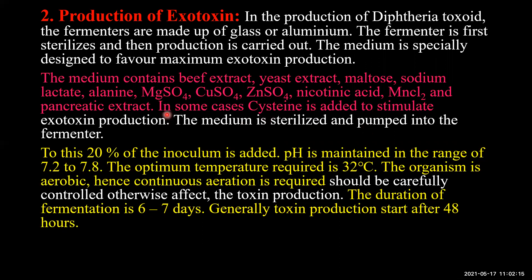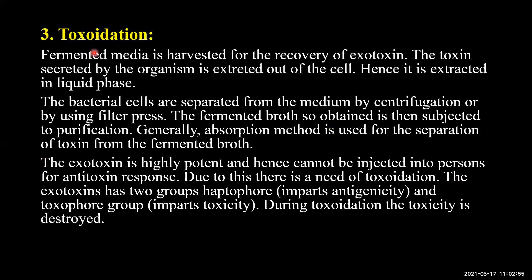The medium is first sterilized and then pumped into the sterile fermenter. Twenty percent of the prepared inoculum is added to the main fermenter. The pH is maintained in the range of 7.2 to 7.8, and the optimum temperature is 34 to 37°C. Since the organism is aerobic, continuous aeration is required; otherwise toxin production may be hampered. Duration of fermentation is around six to seven days, and toxin production generally starts after 48 hours of inoculation.